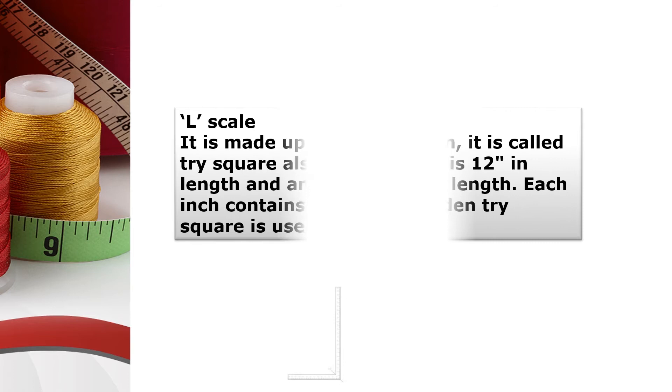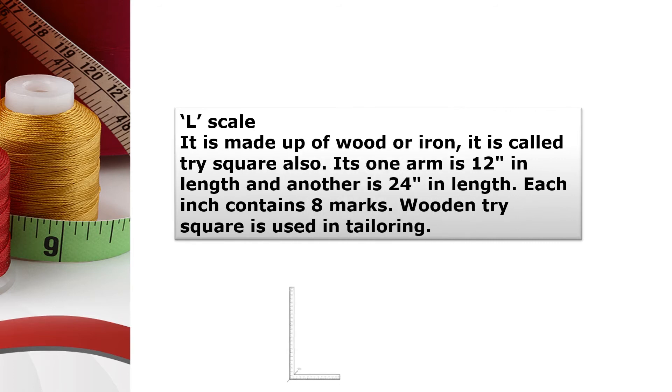L-Scale is made up of wood or iron. It is called try square also. Its one arm is 12 inches in length and another one is 24 inches in length. Each inch contains 8 marks. Wooden try square is used in tailoring.